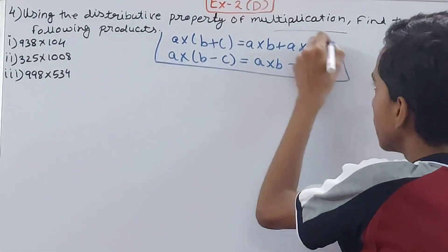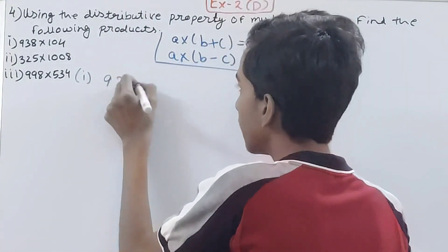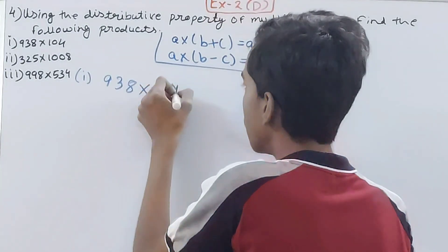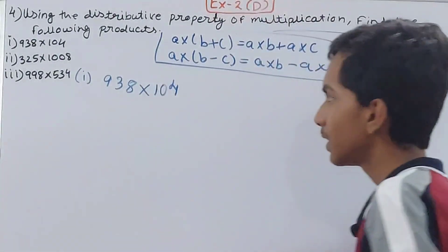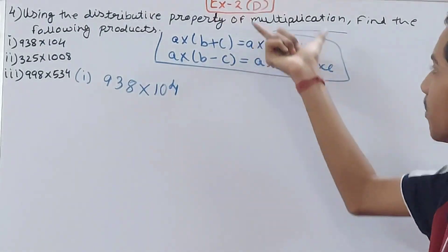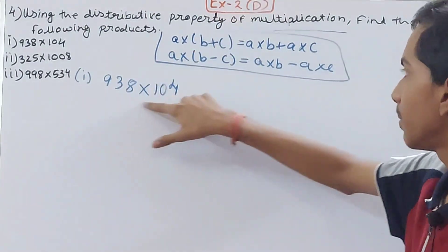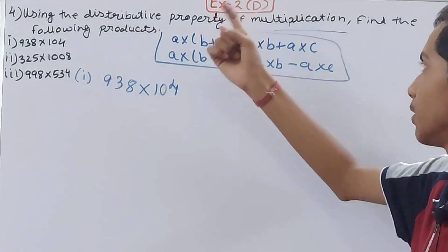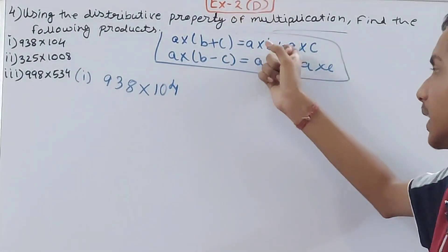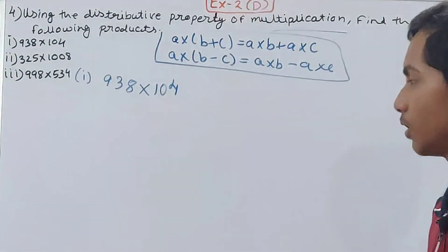Now see the first part: 938 × 104. Previously, we were given the number, it was broken down in this form. Now the numbers are in simple multiplication form. We have to break them down and then find the final answer.